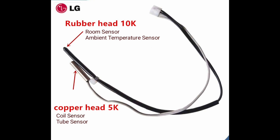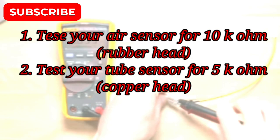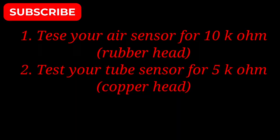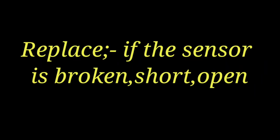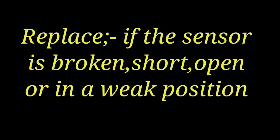Number three: test your air sensor for 10K ohms — rubber head — and test your tube sensor for 5K ohms — copper head — using your multimeter. Check both sensors to see if the readings are okay. Replace the sensor if it is broken.